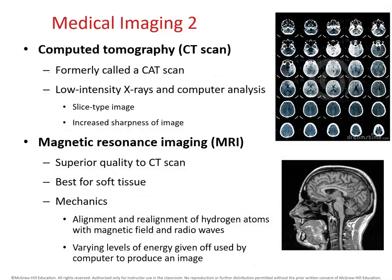CT scans — we used to call them CAT scans, but we don't anymore. CT scans use x-rays and take slices of an image. You can see here a slice off the very top of someone's head. Obviously their head wasn't physically sliced — it's done using imagery — and this is a slightly deeper slice, and deeper and deeper.